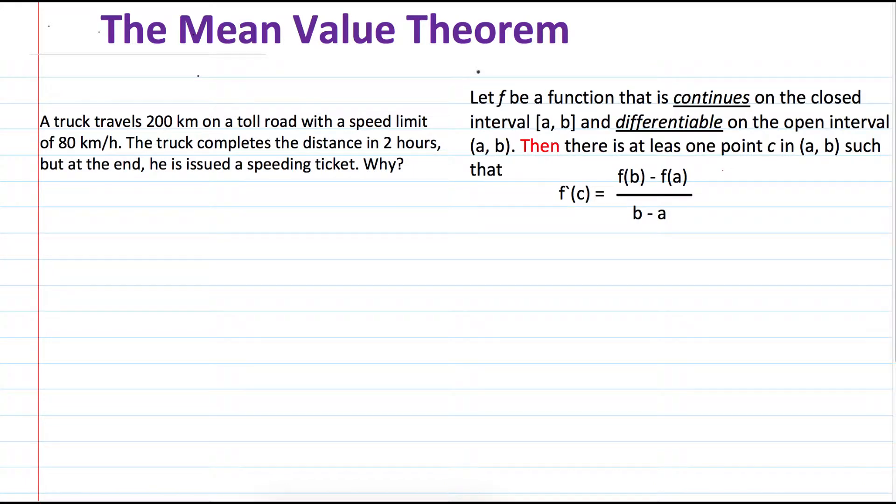Keeping in mind that we know what is the mean value theorem. So we have a car, a very beautiful car. It starts right here. Suppose this point right here, this is A, and it wants to go to point B. The distance from here to here is 200 kilometers.